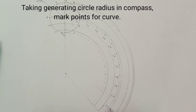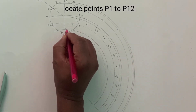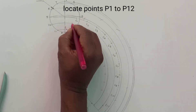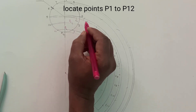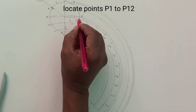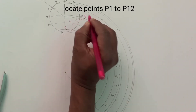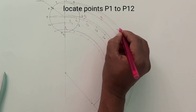Mark all these intersection points: this is point 1, this is point 2. Be careful while marking these points, because there are already many points marked and among these we have to identify the correct ones. The right points will help us draw the epicycloid. Continue marking up to point 8 and point 9.